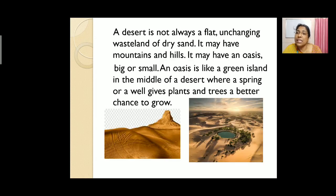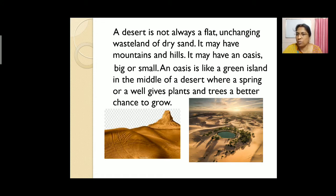A desert is not always a flat, unchanging wasteland of dry sand. It may have mountains and hills. It may have an oasis, big or small. An oasis is like a green island in the middle of a desert where a spring or a well gives plants and trees a better chance to grow.